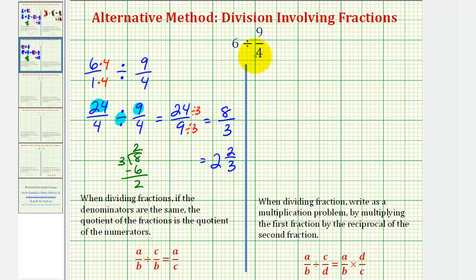So going back to the original division problem, this quotient tells us there are 2 and 2 thirds copies of 9 fourths in 6. Or there are 2 and 2 thirds 9 fourths in 6.